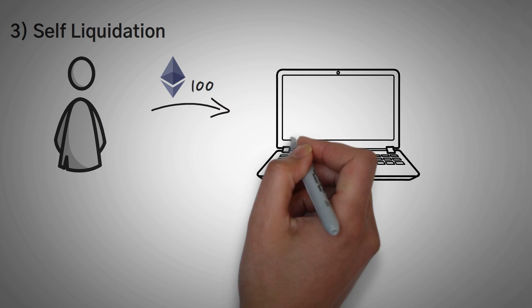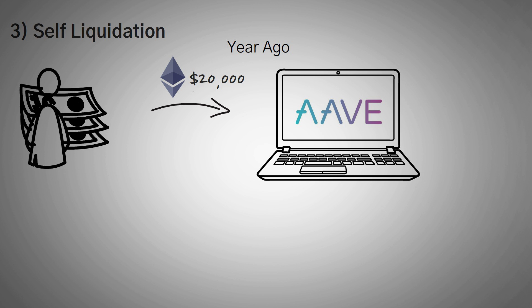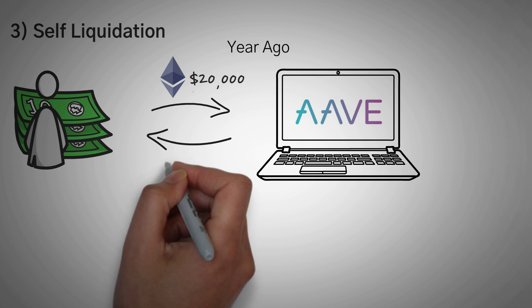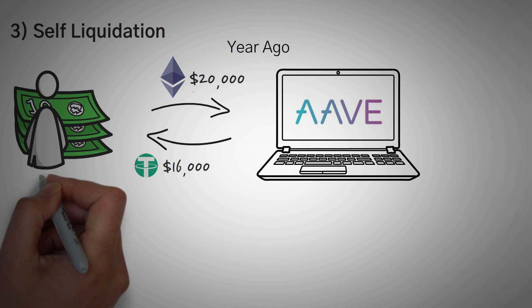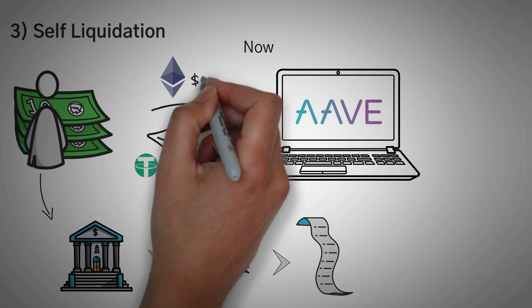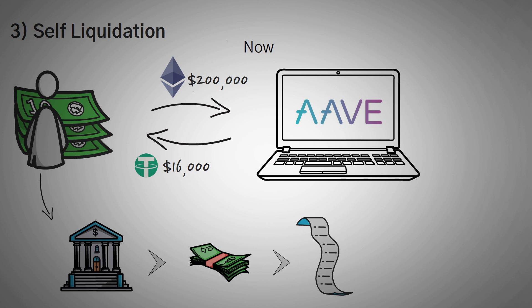Purpose number three is self-liquidation. Let's say you deposited around 100 Ethereum into Aave about a year ago when it was worth $200 each, so basically $20,000 worth of Ethereum. You did this because you were bullish on Ethereum and wanted to earn some free interest. However, at the time you needed money, so you took out a loan of $16,000 in Tether, transferred it to your bank account, and cashed it out to pay bills. Now Ethereum is worth $2,000 each, so you still have $200,000 worth of Ethereum locked up as collateral, and you want immediate access to it.